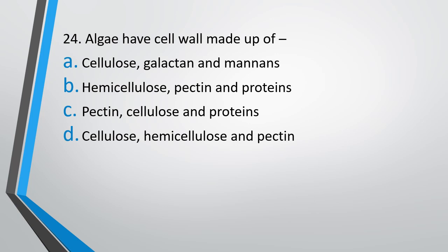Question number 24. Algae have cell wall made up of: (A) Cellulose, Galactin and Mannins; (B) Hemicellulose, Pectin and Proteins; (C) Pectin, Cellulose and Proteins; or (D) Cellulose, Hemicellulose and Pectin. Correct answer is option A — Cellulose, Galactin and Mannin.